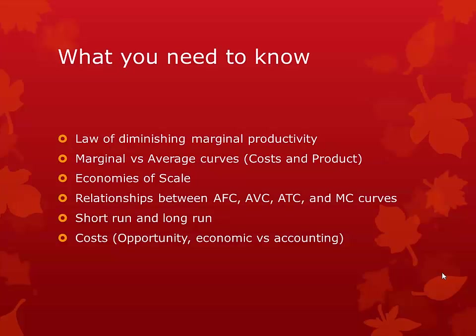Here's what you need to know for this chapter. You need to know what the law of diminishing marginal productivity is, the difference between marginal and average — whether it be costs and product — the economies of scale, the relationship between average fixed costs, average variable costs, average total costs, and marginal costs, and what the curves look like.